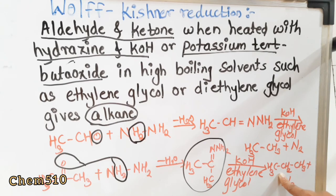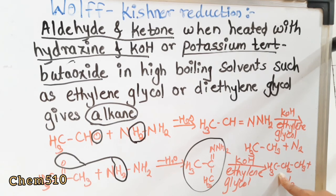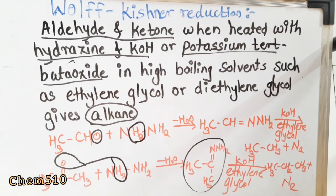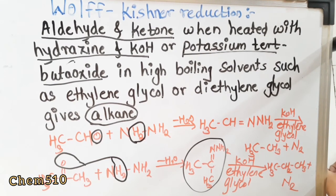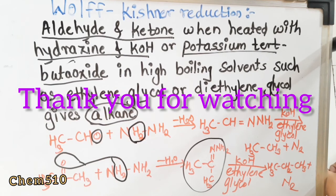In Clemmensen reduction, zinc amalgam acts as the catalyst, and in Wolff-Kishner reduction, hydrazine and KOH act as the catalyst. If you have any doubts about this, you can mention them in the comment box. Thank you for watching this video.